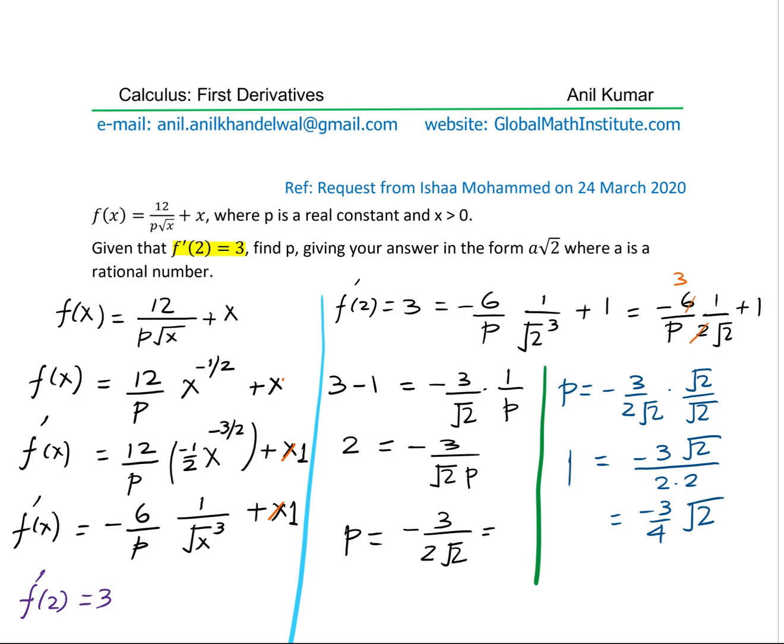That's the value of p. The question is, find p giving your answer in this form. So that is the form where a is minus 3 by 4, correct? So the answer will be p is equal to minus 3 over 4 square root 2.